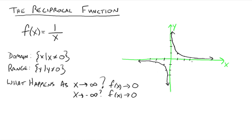What happens as x comes into 0 from the right-hand side? So say 1/2, 1/3, 1/4, 1/5 — as x gets closer and closer to 0 from the right, your y values keep getting bigger and bigger. When x is 1/1000, your y value would be 1000. And coming at 0 from the left-hand side — say x is negative 1/2, negative 1/3, negative 1/100 — your y values keep getting larger and larger in the negative direction. When x is negative 1/100, your y value is negative 100.